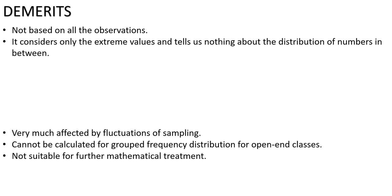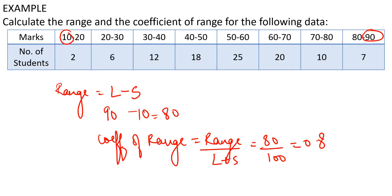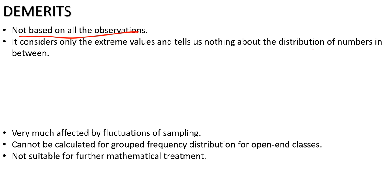Now let's look at the demerits of range. First, range is not based on all observations. We only use the lowest and largest values, ignoring all middle values. So it is not a reliable measure of spread — it considers only the extreme values and tells us nothing about the distribution of numbers in between. This makes it a poor measure of variation.